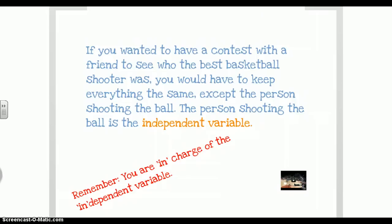If you wanted to have a contest with a friend to see who's the best basketball shooter, you'd have to keep everything the same except the person shooting the ball. Everything has to be exactly the same except one small thing. That's what a good controlled experiment is. In this case, that one small thing is the person shooting the ball, and that's the independent variable. It's the one thing you are in charge of and the one difference in the experiment.